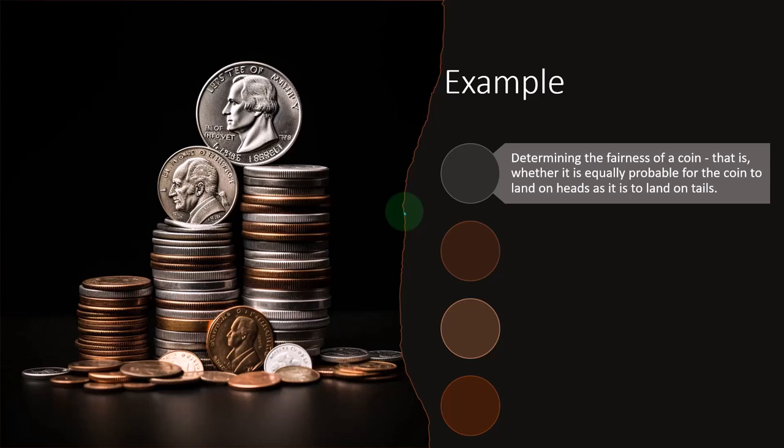That would be the assumption we would have, and that would be basically our null type of assumption. The null assumption oftentimes is that things are going to be as is—the standard assumption. It would be more unusual if the coin did not land, statistically speaking, on a 50-50 chance. So what are the chances that the coin is not fair, that it's more likely to land on heads, for example, than on tails?